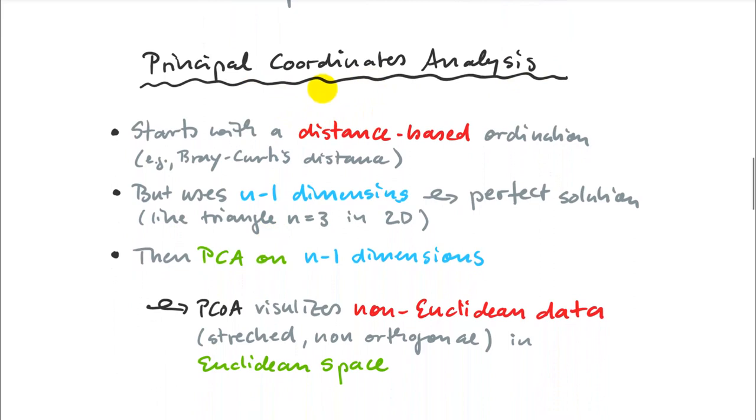The second technique that we have in the lab is principal coordinates analysis. That's an interesting mix of rotation and distance based technique. You start with a distance based ordination, so you can calculate a Bray Curtis distance and you ordinate those. But the trick is, and that makes it real easy, there is no special skill involved in this particular ordination, is that you use n-1 dimensions. There's a perfect solution for this. If you remember, we had this example with a triangle where we had three points. I can always find a perfect solution to display three points in 2D without any stress. That's what you do in PCoA. You start with that sort of ordination that gives you a perfect solution in n-1 dimensional space.